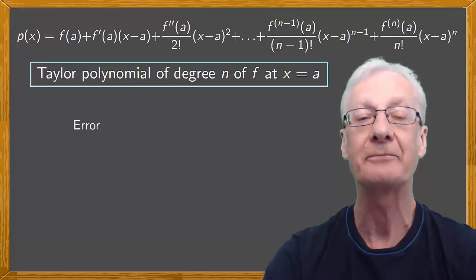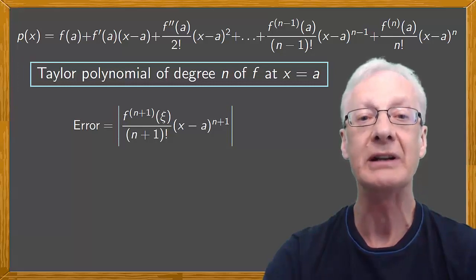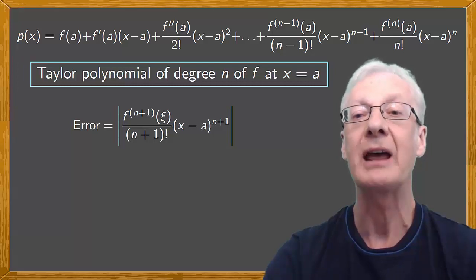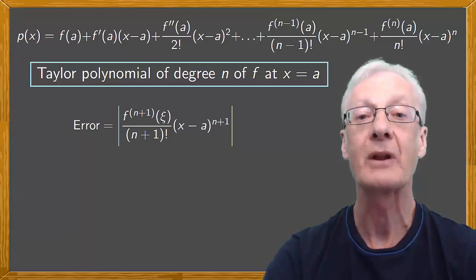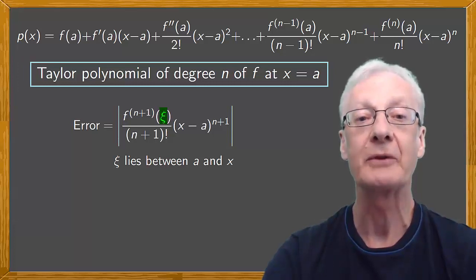If we approximate f(x) by p(x), then the error is the absolute value, which means it must be positive, of the (n+1)th derivative of f at some value we'll call psi, over (n+1) factorial, times x minus a raised to the (n+1), where psi lies between a, the value where we calculate the Taylor polynomial, and x, which is the value where we approximate.